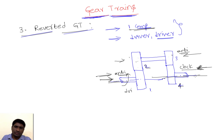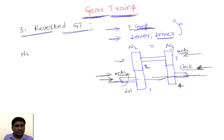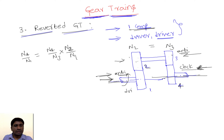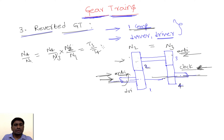This is a reverted gear train. Here n2 equals n3 since gears 2 and 3 are on the same compound shaft. The speed ratio is: n4/n1 = (n4/n3) × (n2/n1). Since n2 = n3, this simplifies to n4/n1 = (t3/t4) × (t1/t2). Cancelling n3 and n2 gives us the final speed ratio in terms of number of teeth.